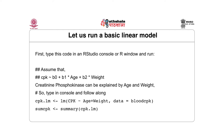We say that creatine phosphokinase can be explained by a combination of height and weight. Coming back to R language conventions, we can put in a Wilkinson-Rogers formula: cpk.lm is the object storing the linear model, where CPK is the outcome variable sitting on the leftmost end, followed by a tilde, then age plus weight — remembering that plus does not mean age and weight are added together. Then we specify the data, and store a summary of that object in SUMCPK.